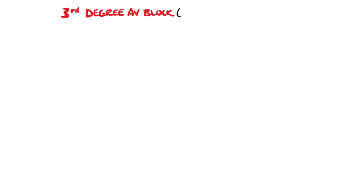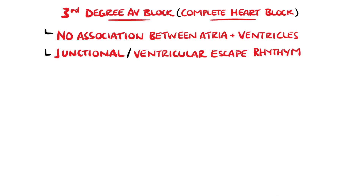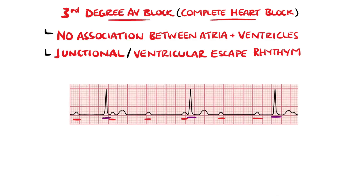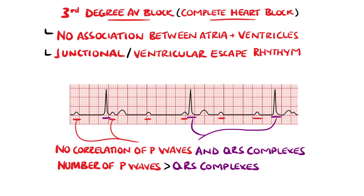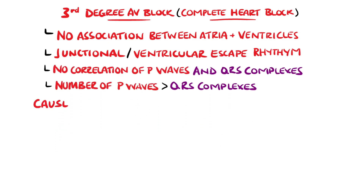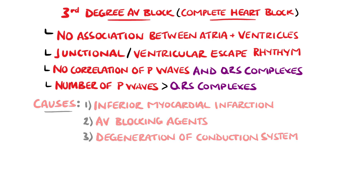Third degree AV block is also known as complete heart block, where there is no association between atrial and ventricular contractions. The rhythm causing blood to leave the heart is either from a junctional or ventricular escape rhythm. This appears on the ECG as P-waves that do not lead to a QRS complex, and more P-waves than QRS complexes, indicating a higher atrial rate than ventricular rate. This is the end stage of second degree heart block, with similar causes — the most common being inferior myocardial infarction, AV node blocking agents, and degeneration of the conduction system.